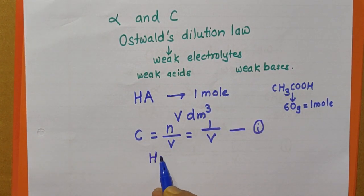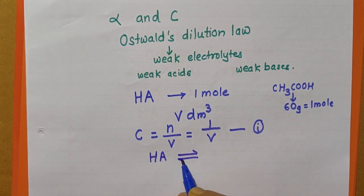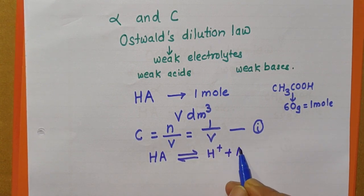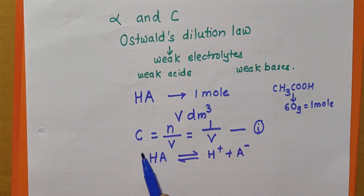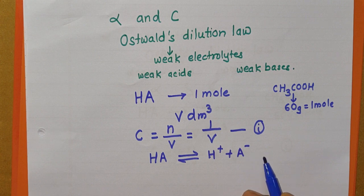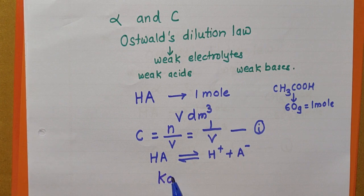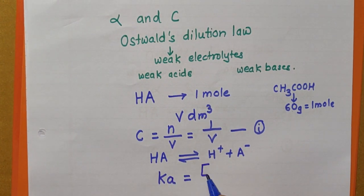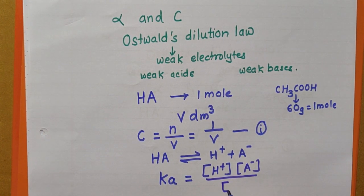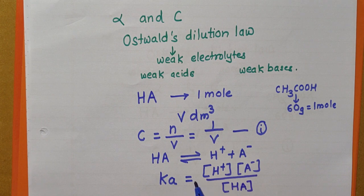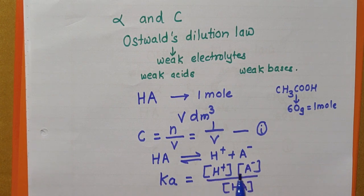When HA is dissolved in water, it ionizes to give H⁺ and A⁻ ions. As it is a weak acid, it cannot be completely ionized — there are undissociated HA molecules along with H⁺ and A⁻ ions in solution. Applying the law of mass action, we write the expression for the equilibrium constant: Ka, the dissociation constant of the acid, equals concentration of H⁺ multiplied by concentration of A⁻, divided by concentration of HA.